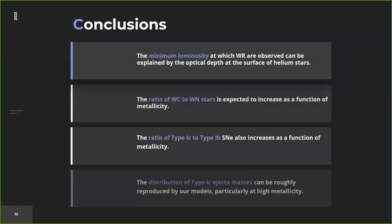To conclude this first part: we were able to predict the minimum luminosity at which Wolf-Rayet stars can be observed depending on their surface properties and mass loss rates. Using this, we calculated the ratio of WC to WN stars as a function of metallicity, finding it increases with metallicity. We also calculated the ratio of type 1c to type 1b supernovae as the universe becomes more metal rich, and roughly matched the distribution of type 1c ejecta masses with some caveats. This will be a powerful tool to understand how binary evolution at different metallicities affects the transients we see.